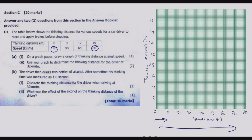Similarly for the y-axis, thinking distance: the maximum is 15. We go up to 16 so we can split the axis in intervals of 2 — from 0 to 2, then to 4, then to 6, all the way up to 16. This allows us to draw the graph properly without distorting it.